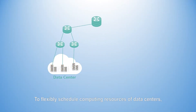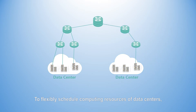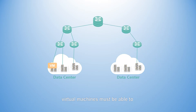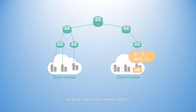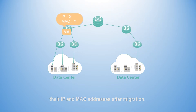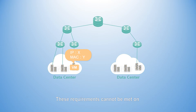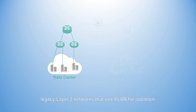This quantity is unable to support the required millions of virtual machines. To flexibly schedule the computing resources of data centers, virtual machines must be able to migrate across devices, areas, or even data centers. And to ensure service continuity, virtual machines must be able to retain their IP and MAC addresses after migration. These requirements cannot be met on legacy layer 2 networks that use VLAN for isolation.